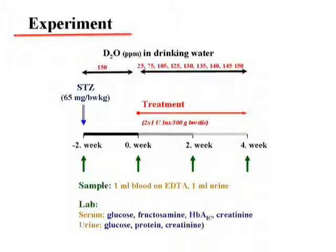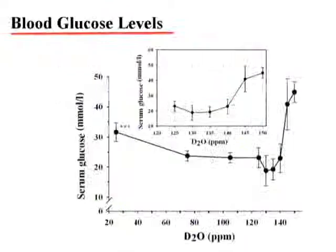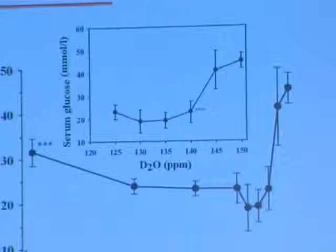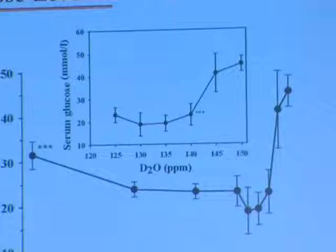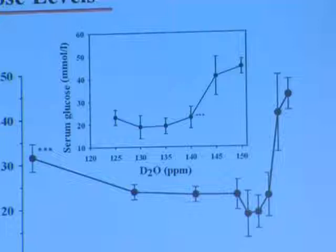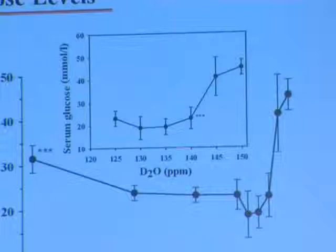We again measured very similar parameters. Now let's see how the blood glucose level changed as we changed the deuterium content of the drinking water. As you see here, this is the ppm increasing up to tap water. When we started to withdraw the deuterium, the glucose level dropped — all animals received the same amount of insulin but different doses of deuterium. It rapidly affected glucose uptake and reached a steady state, with an optimum around 130–135 ppm.